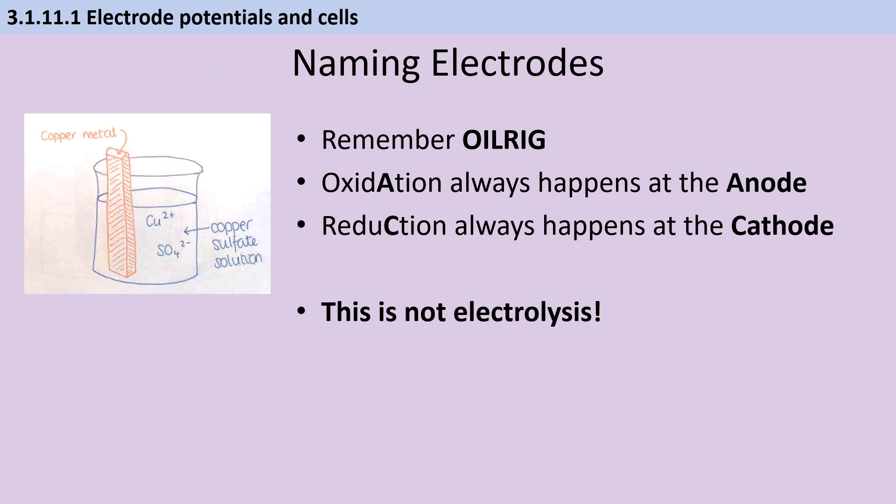You know from GCSE that oxidation is loss of electrons and reduction is gain of electrons, and you should remember that oxidation always happens at the anode and reduction always happens at the cathode. Please note this is not electrolysis and therefore the charge of the electrodes is reversed compared to that.